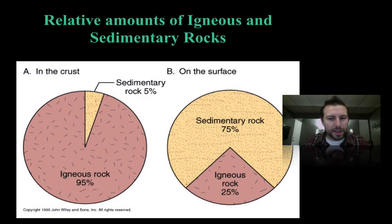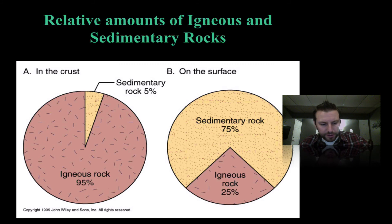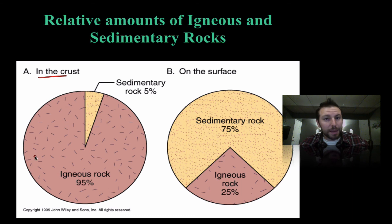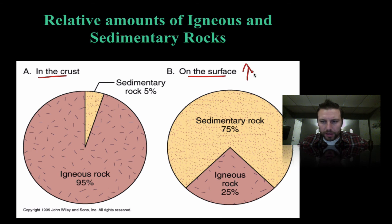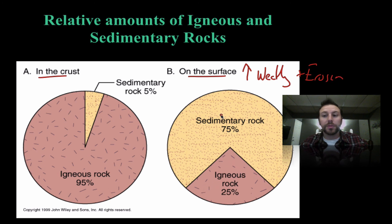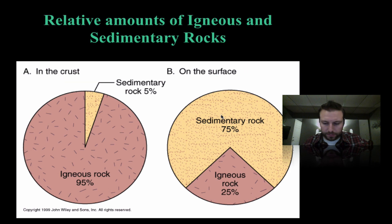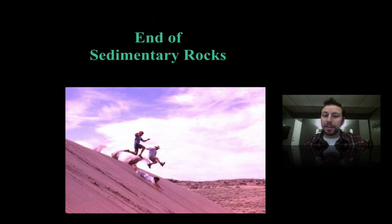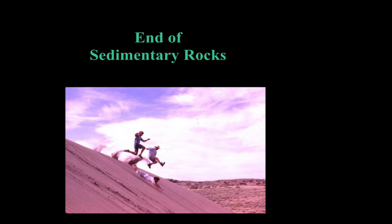If we look at the crust or surface, we can see it's mostly igneous rock — magma cools and solidifies to form igneous rock, and there's very little weathering and erosion inside the crust. On the surface, increased weathering and erosion cause igneous rock to break down and form sedimentary rock. And that's it — the end of sedimentary rocks. Hope you enjoyed it, take care!